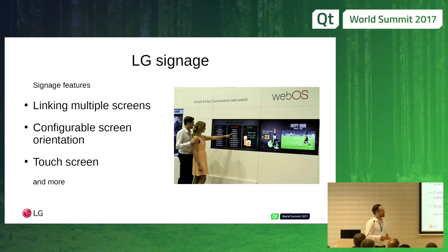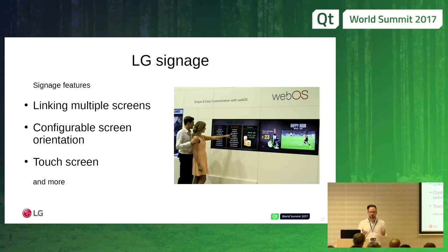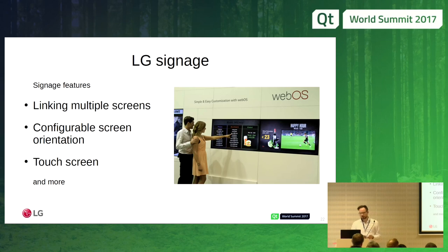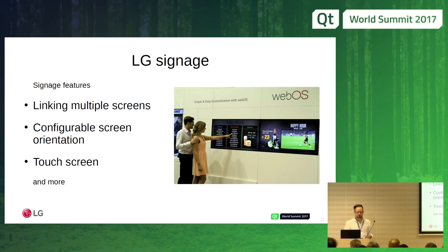We are also working on signage solutions — displays in airports, fast-food restaurants, and hotels showing timetables, menus, and information. Use cases include linking multiple screens: for example, two TV screens side by side showing one scene graph. We have solutions including GL call streaming and HDMI splitting — one using GL and one using a raw HDMI signal — and also touch screens on these larger devices.